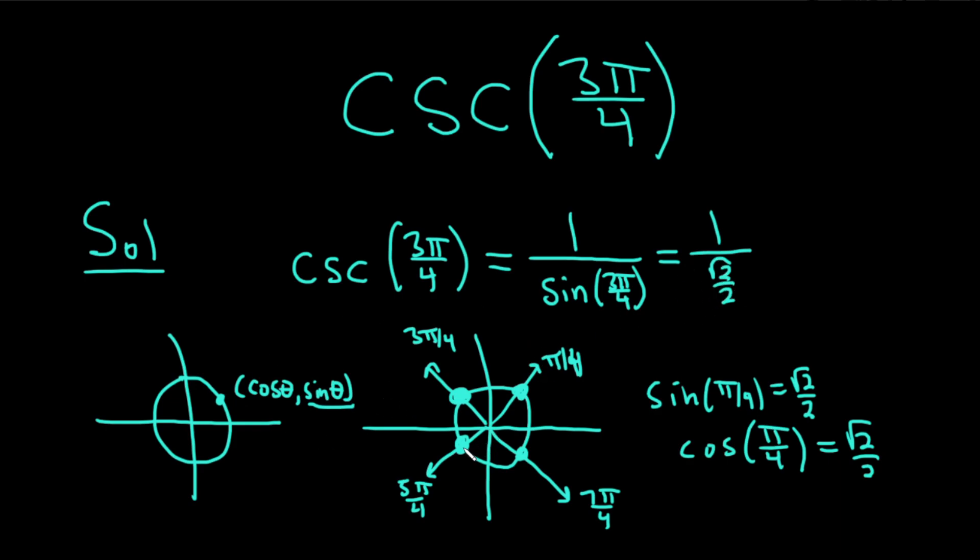you can get all of them, right? Like, what's the cosine of 5π over 4? It's going to be negative because the x-coordinate is negative. So negative root 2 over 2. So you can just get all of them for all these special angles with this little idea.